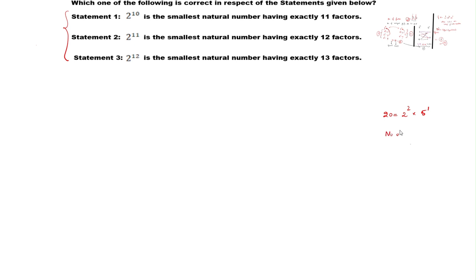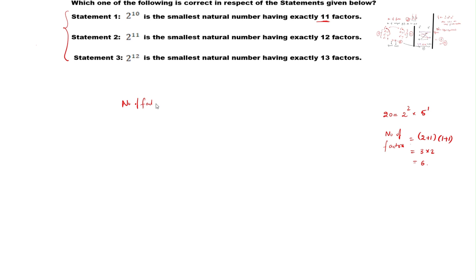The number of factors of 20 is (2+1) times (1+1) = 3 times 2 = 6. Now, they have given that the number has exactly 11 factors. So using the formula, the number of factors equals (P+1)(Q+1)(R+1), where P, Q, R are the powers of the unique prime numbers A, B, C.